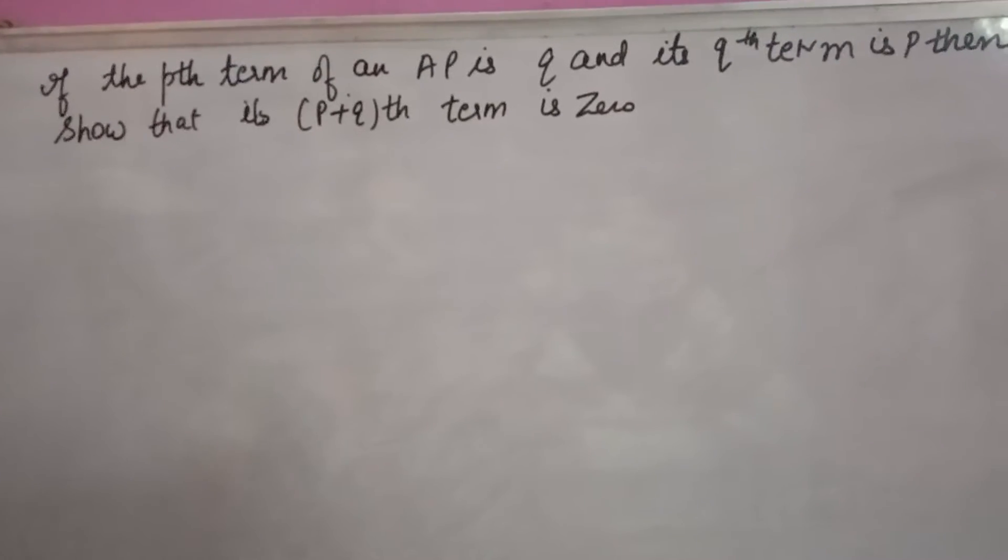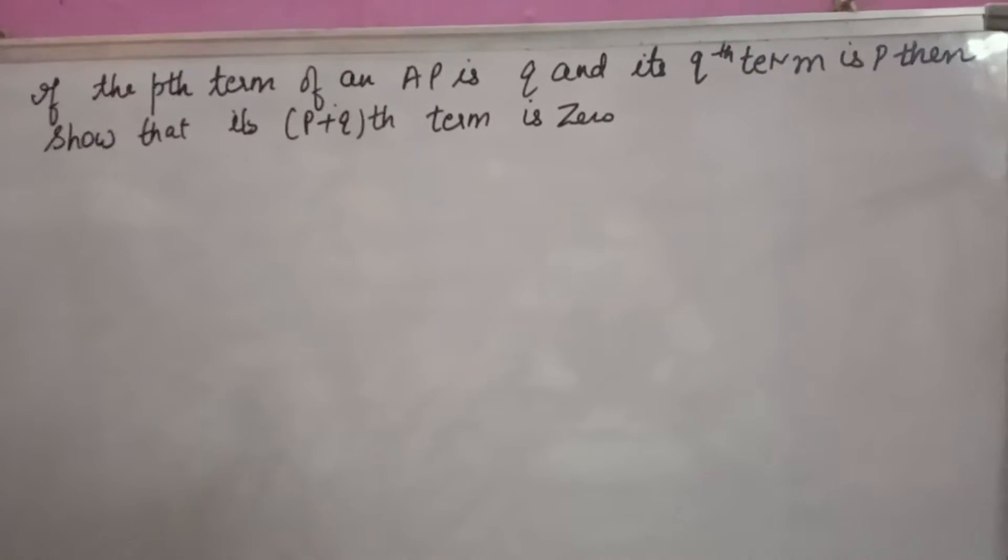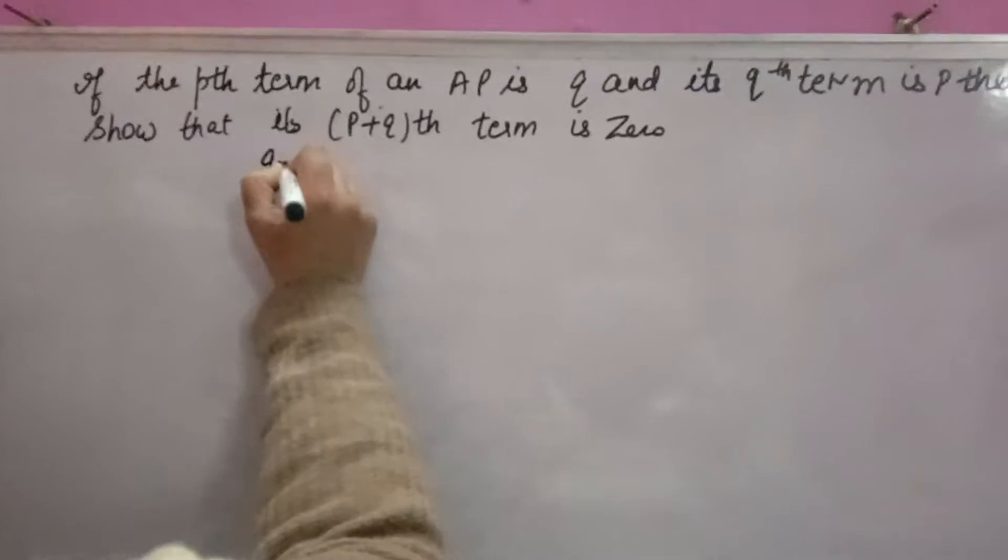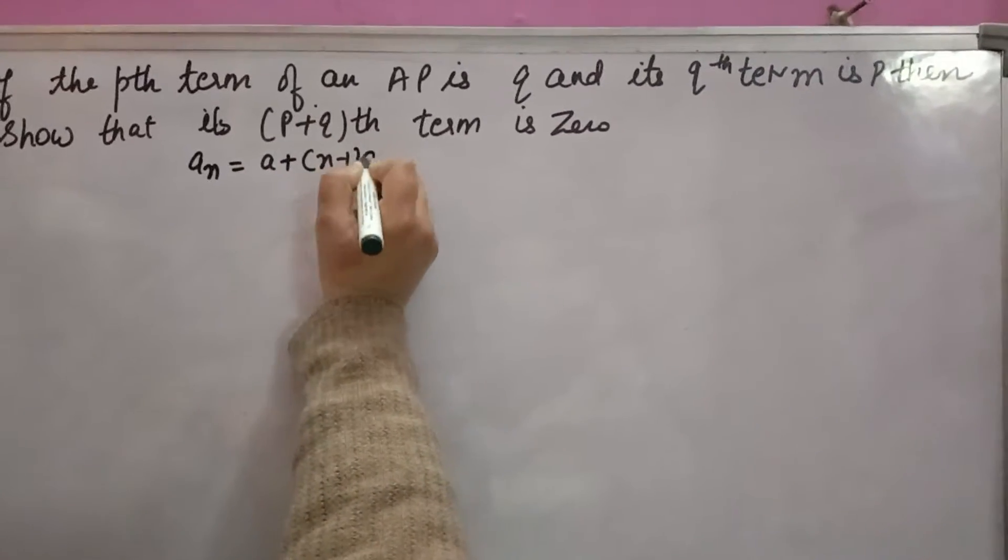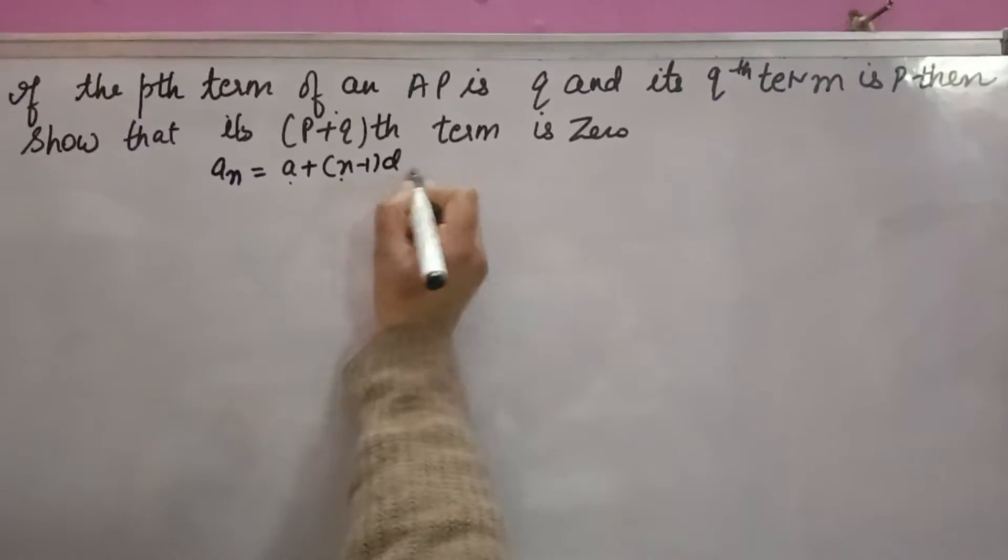See one more important question of AP. If the pth term of an AP is Q, the general term of AP is equal to A plus (n-1) into D, where A is the first term, n is the number of terms, and D is the common difference.